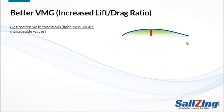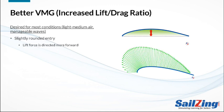Let's look at a drawing of the lift forces on the sail. A rounded entry has curvature up front, which creates lift in the front of the sail pointing forward, helping to propel the boat forward. The entry shown here is quite round to illustrate the concept — but remember, if the entry is too round you won't point as well.